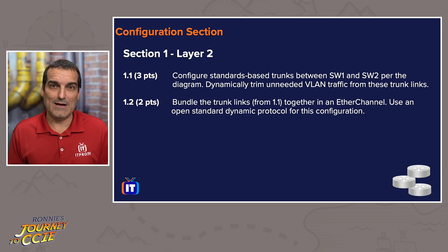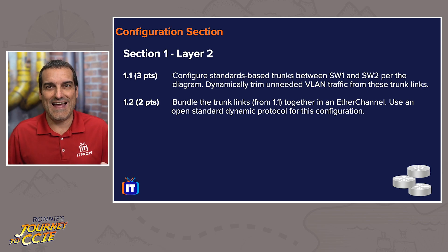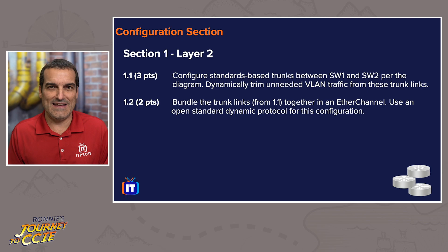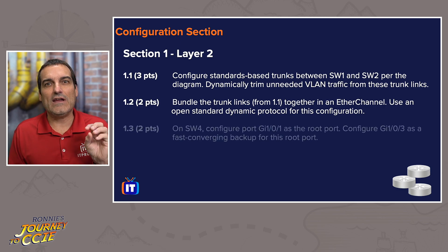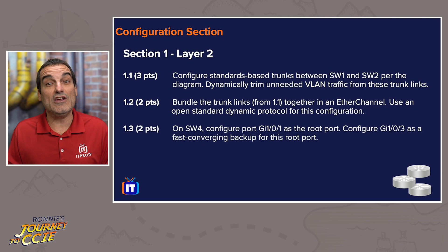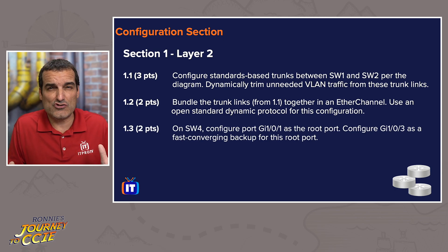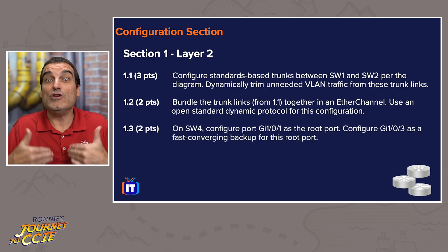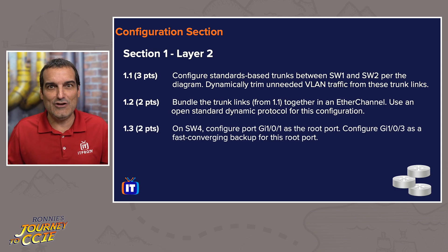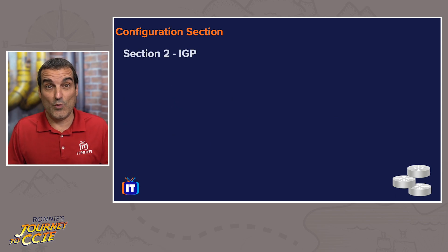Want to see an example of a pure Layer 2 non-core task where no other points depend on it? It's manipulating RSTP and having one port be root and another be the alternate port for the root port. If you think you're going to struggle with that configuration, you can safely skip it — no other points in your lab should depend on it.